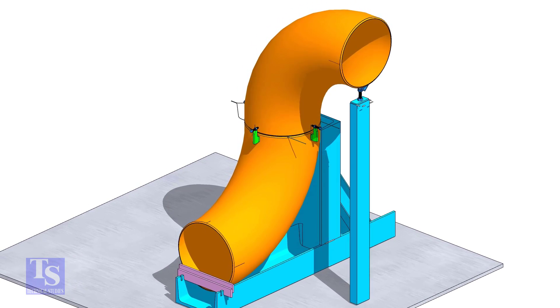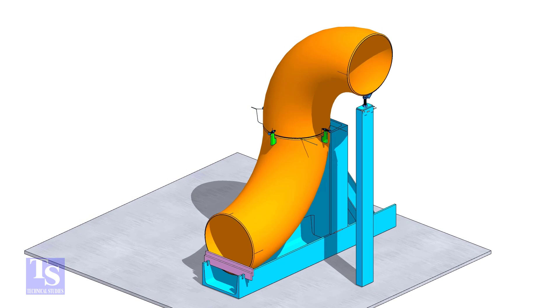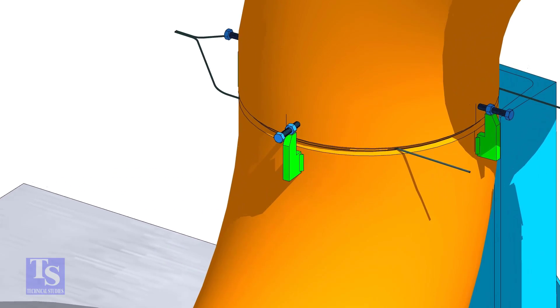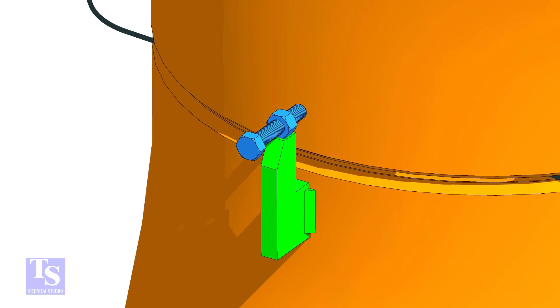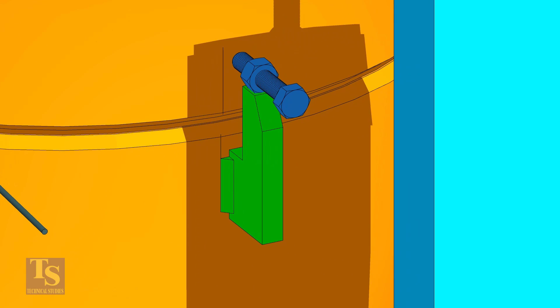Tack weld an adjustable support below this elbow and adjust the height. Check if the gap is correct.